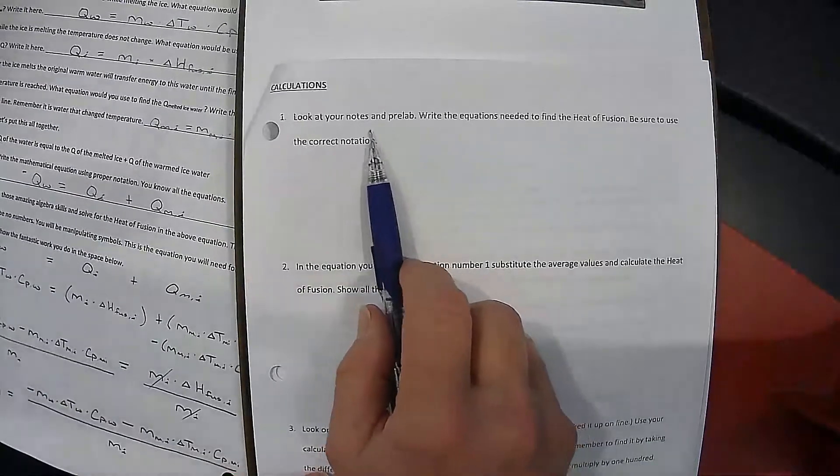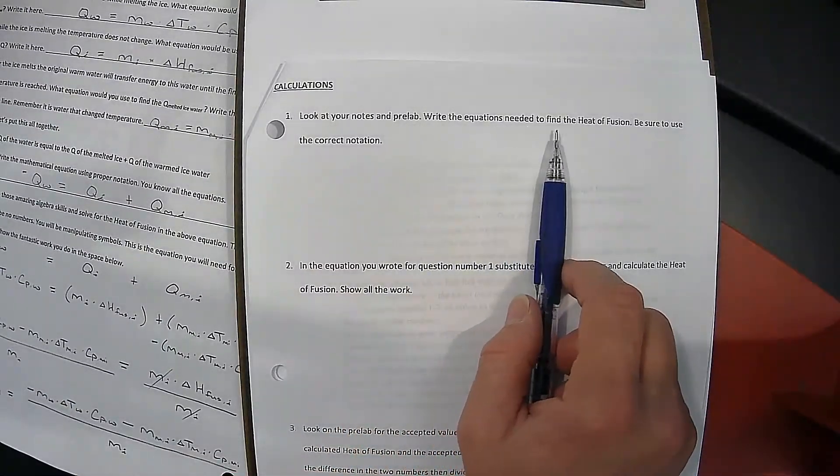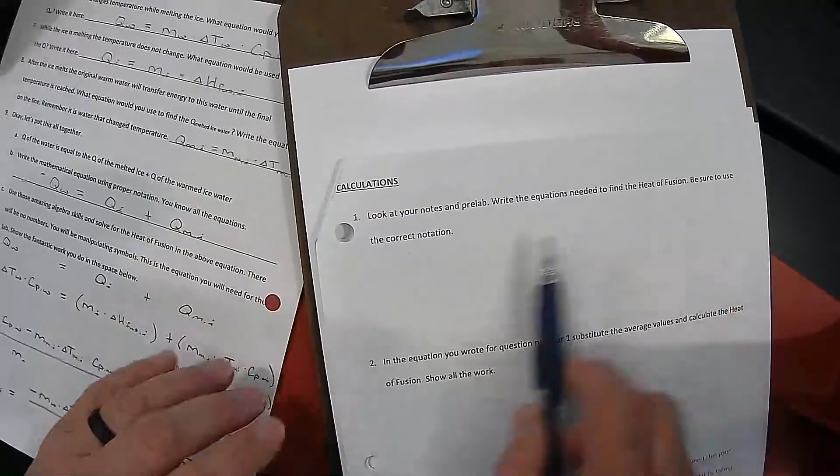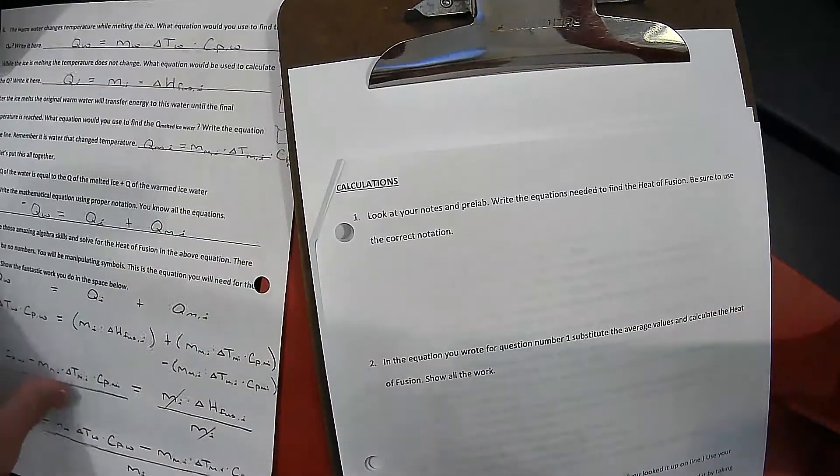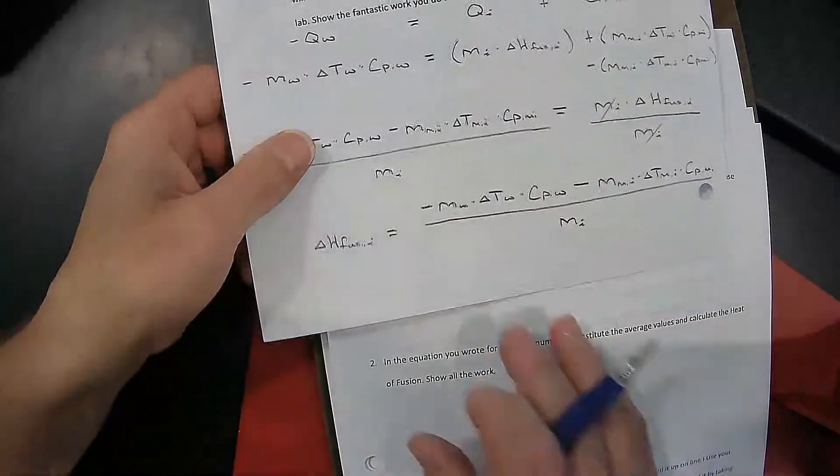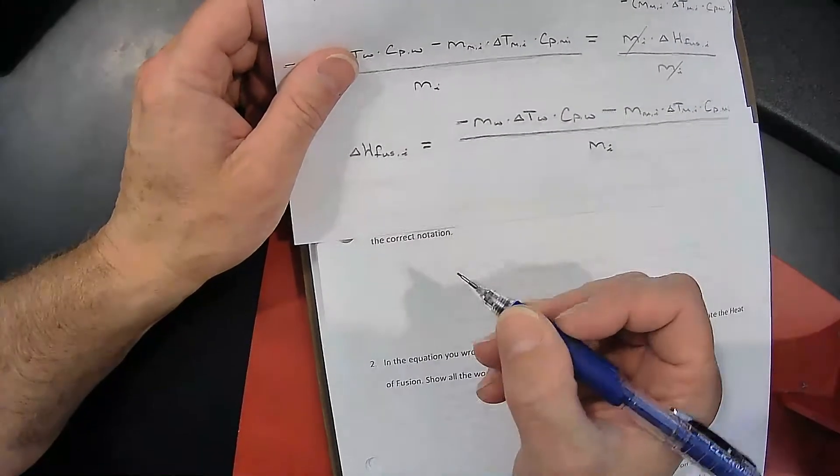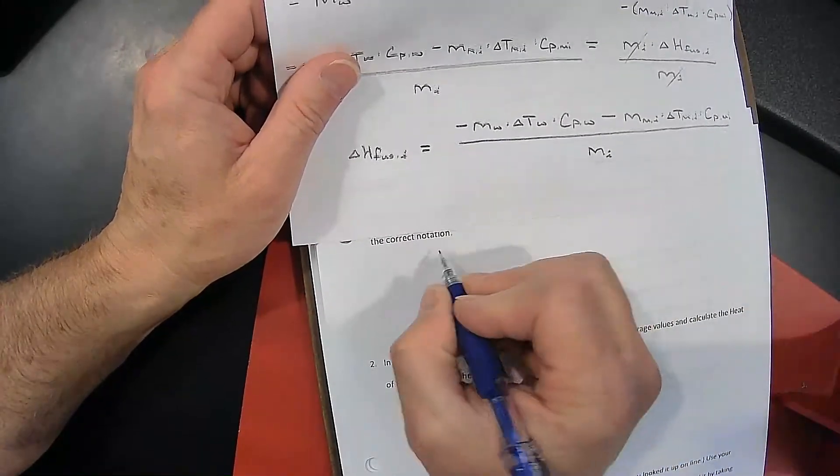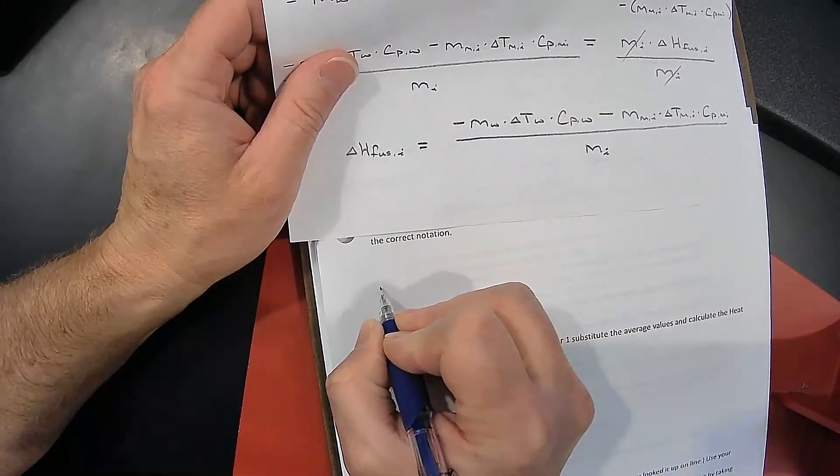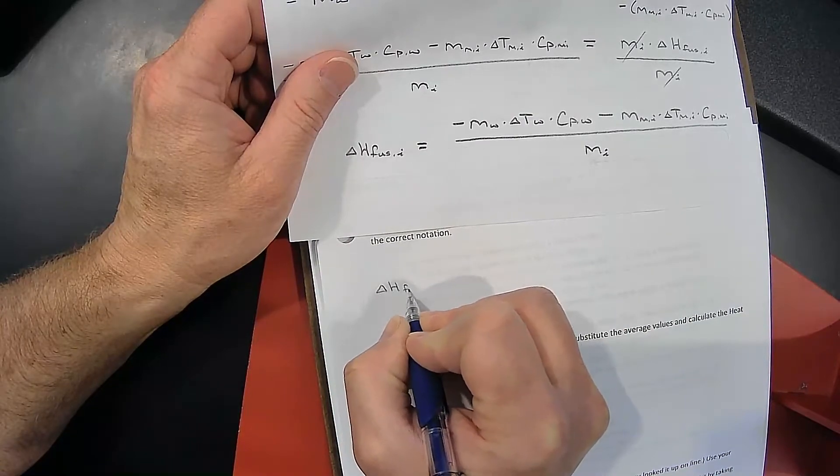In looking at the equation for the heat of fusion of ice, it says look at your notes and pre-lab. Write the equations needed to find the heat of fusion. Be sure to use the correct notation. So what I'm going to do is just copy the equation that we developed here. So heat of fusion, delta H_FUS,